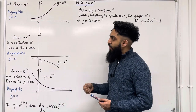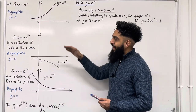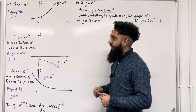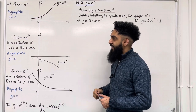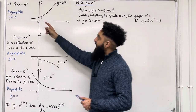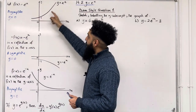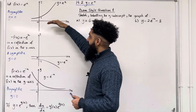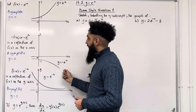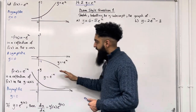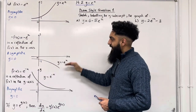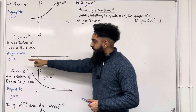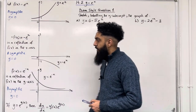Minus f of x is equal to minus e to the power x. It is a reflection of f of x in the x-axis. So if I take f of x equal e to the power x and I reflect in the x-axis, I get something like this. This curve does not cut the x-axis, hence the equation of the asymptote is y equal 0.